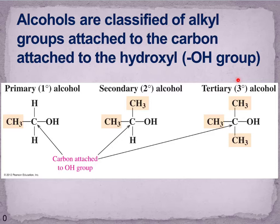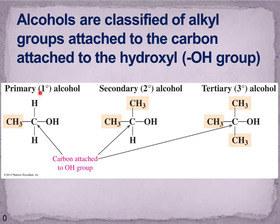Here's how we define something as a primary, secondary, or tertiary alcohol. We find the hydroxyl group — that's the OH. Then I find the carbon that's attached to the hydroxyl group, and I look at how many carbons are attached to that carbon. Here I have my hydroxyl group, I have the carbon attached to the hydroxyl group, and I see there is one carbon attached there, so therefore this is called a primary alcohol.